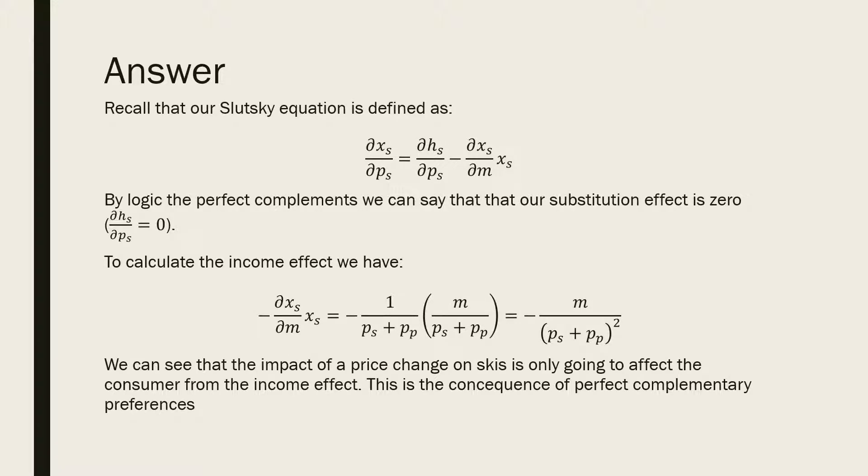We can see that the impact of a price change on skis is only going to affect the consumer from the income effect. And that's the logic of perfect complements. So that should cover up our second example of the Slutsky equation in action. I'll see you in another video.